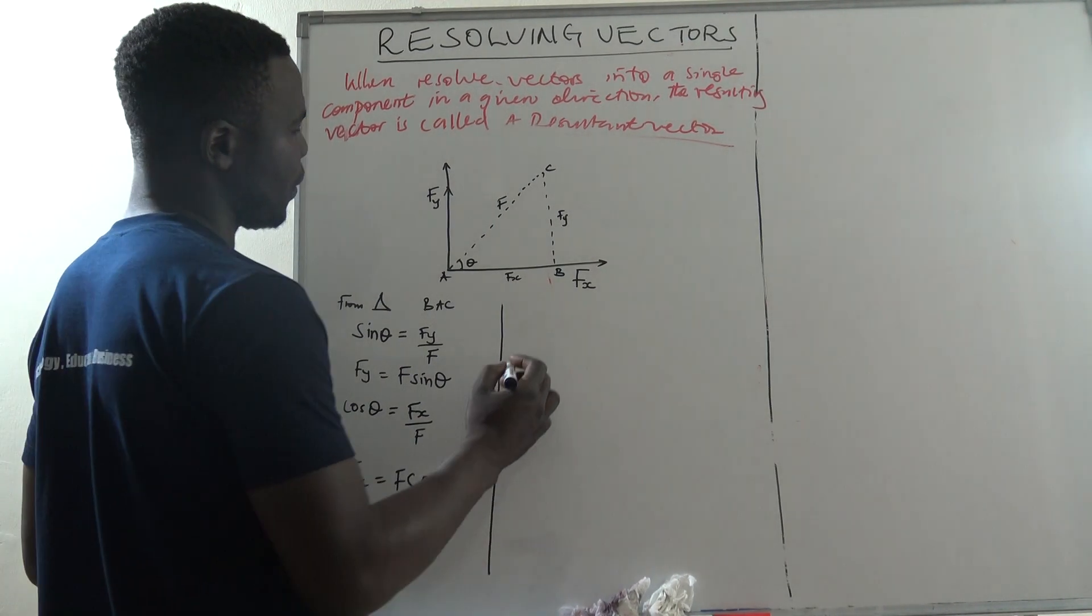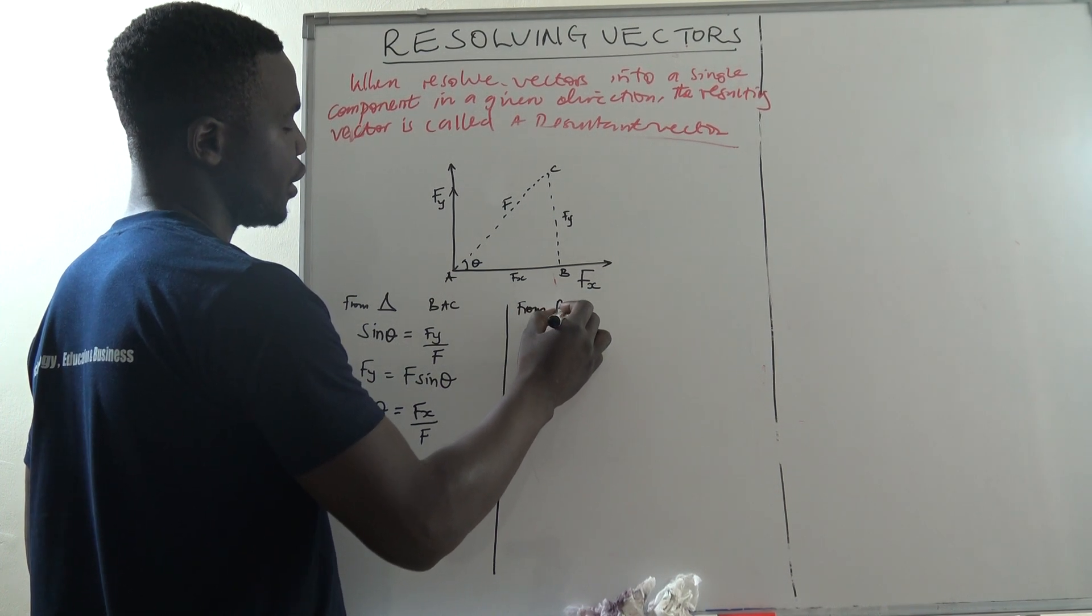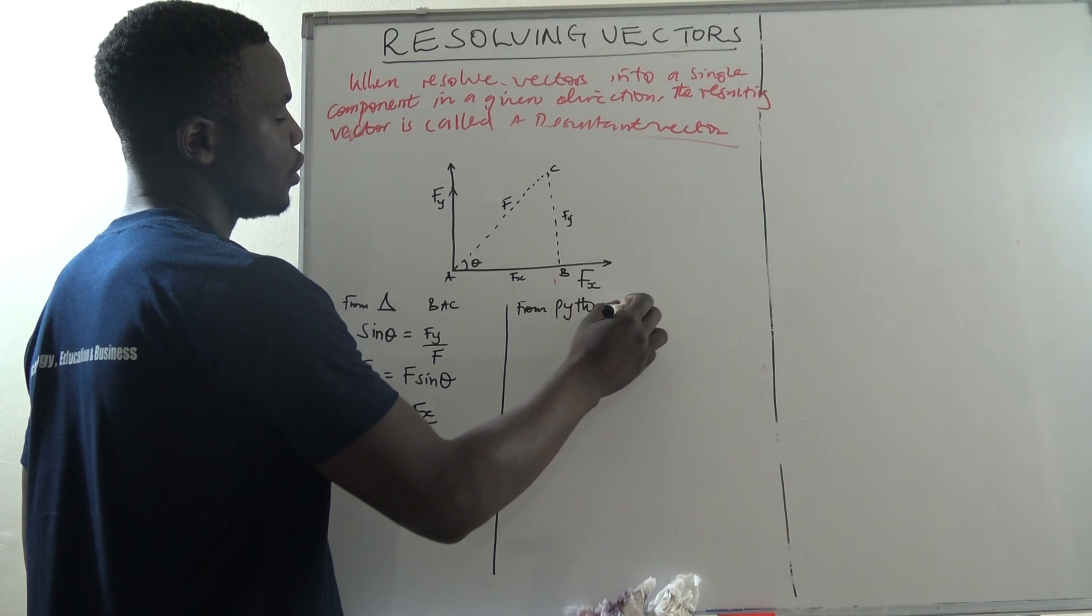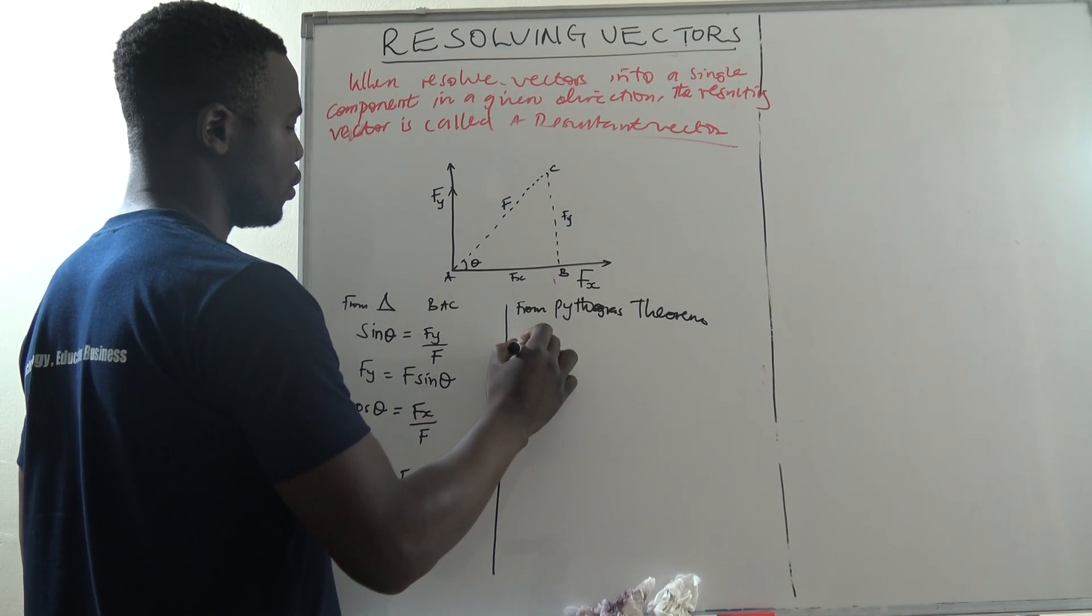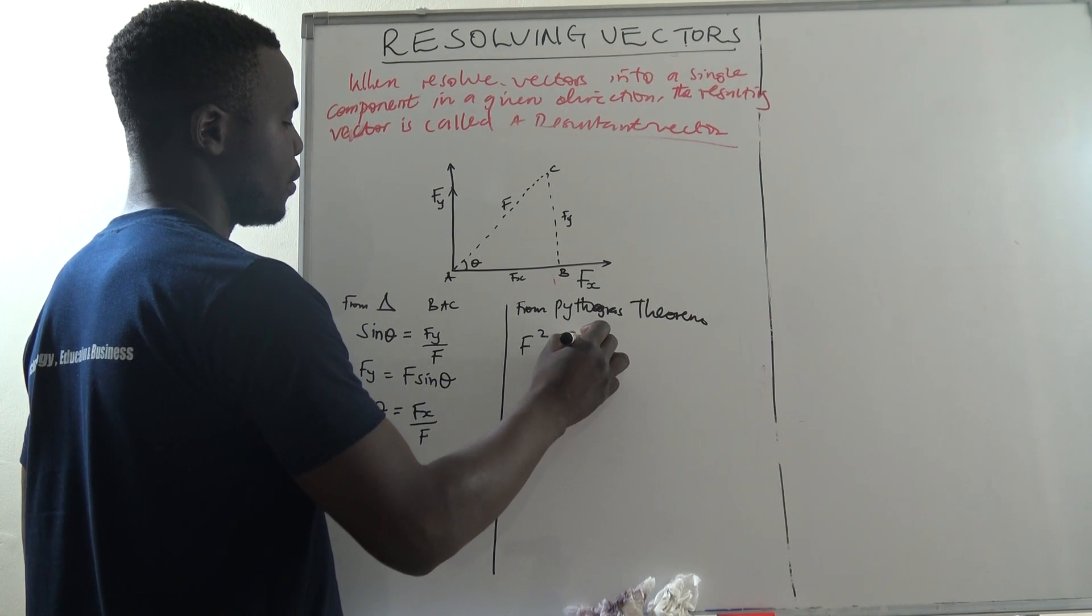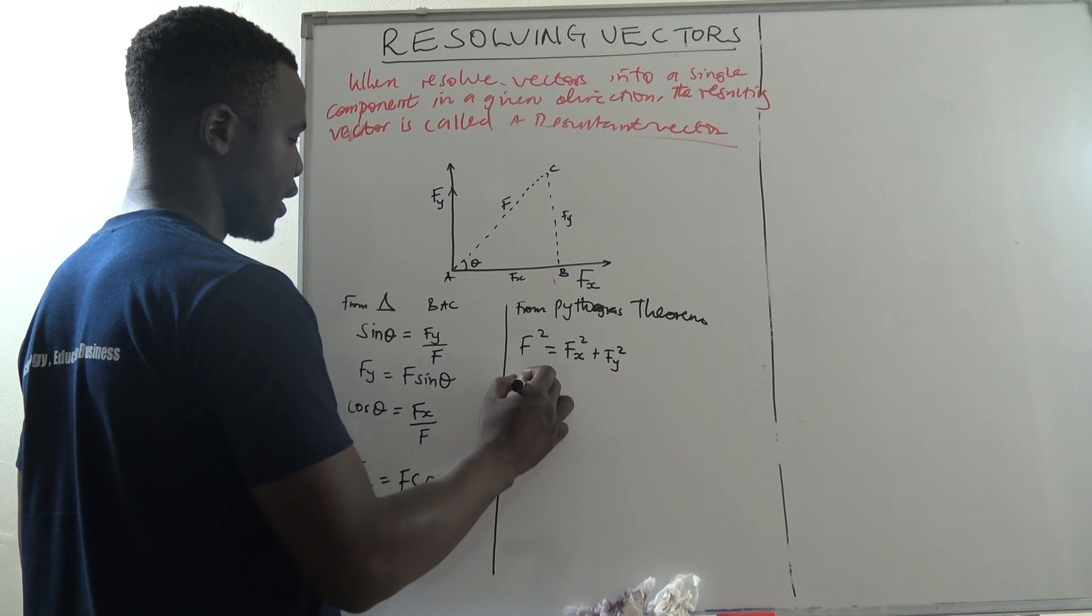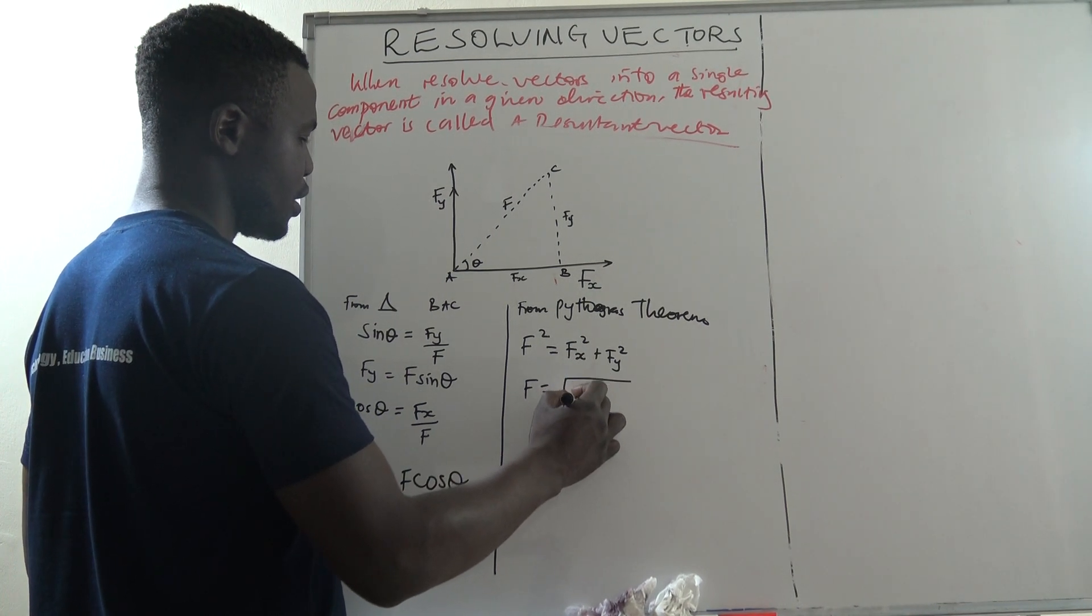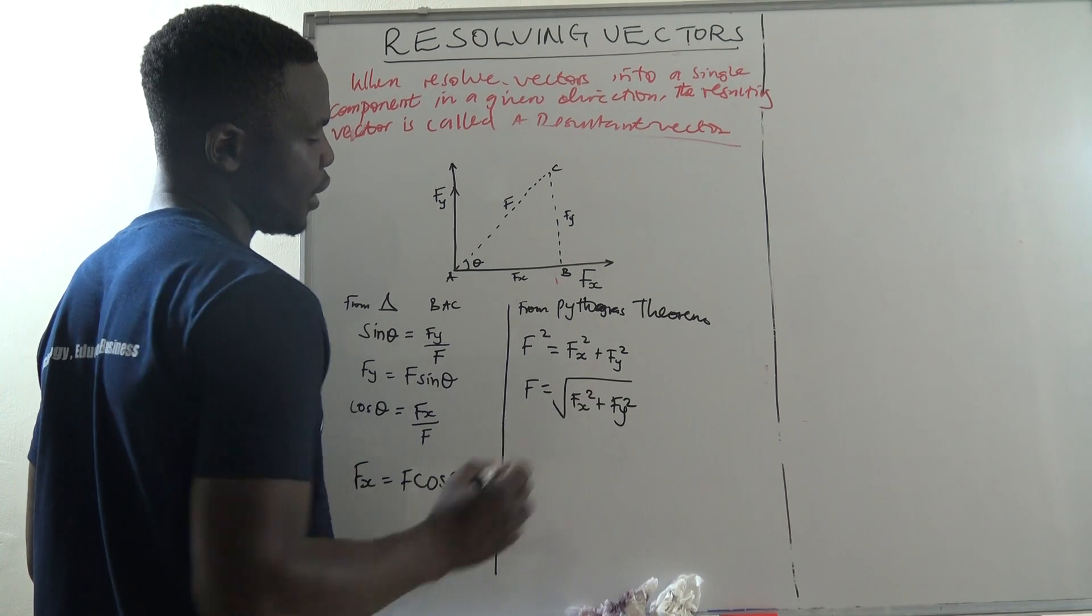If we use Pythagoras theorem, we realize that from our triangle, F squared is equal to Fx squared plus Fy squared. Therefore, our resultant force is equal to the square root of Fx squared plus Fy squared.